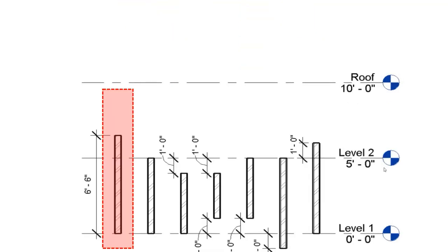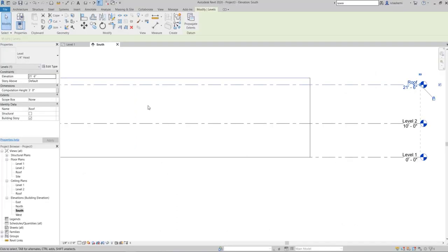If we change the level-to-level height from eight feet to five feet, all walls with top constraints attached to Level 2 adjust automatically — except the first wall, which is unconnected. This demonstrates the parametric feature that Revit has. Now let's get back to our model.